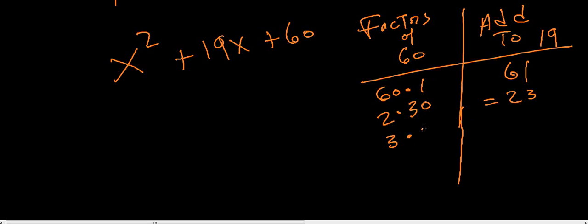There's 2 times 30. Well, that adds to... What about 3 times 20, right? Well, that adds to 23. 2 times 30. 2 plus 30 is 32. 3 plus 20 is 23.